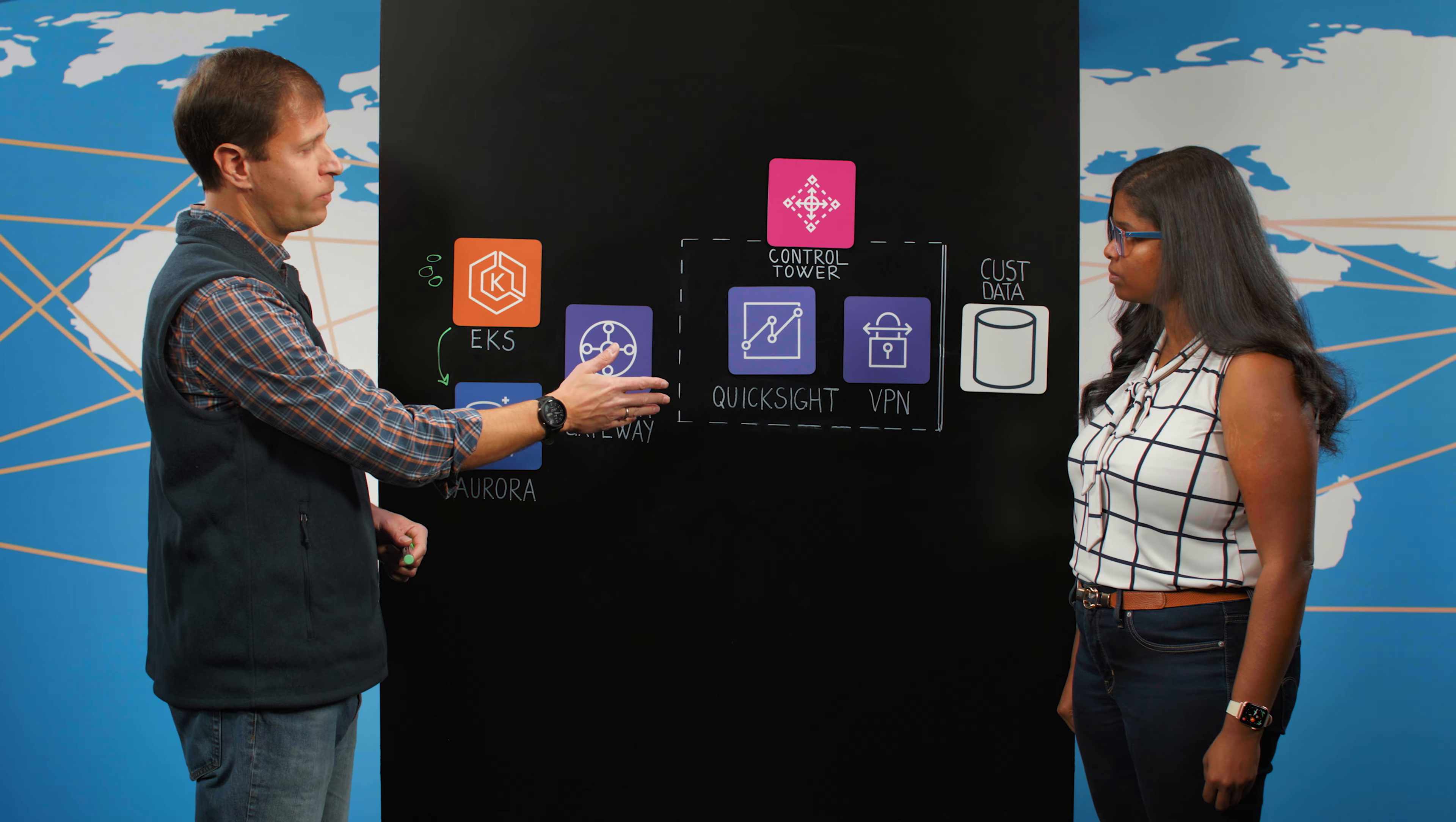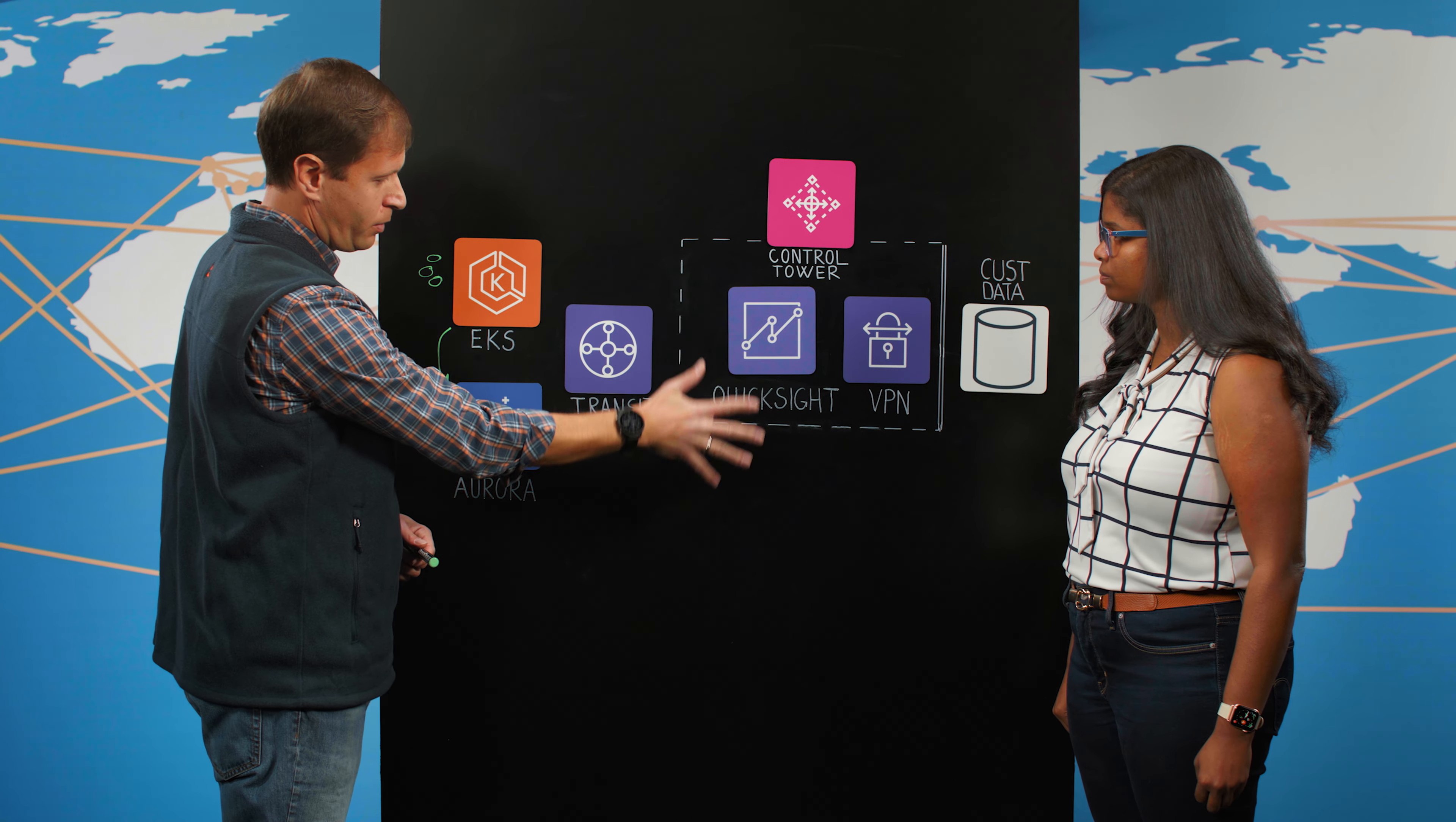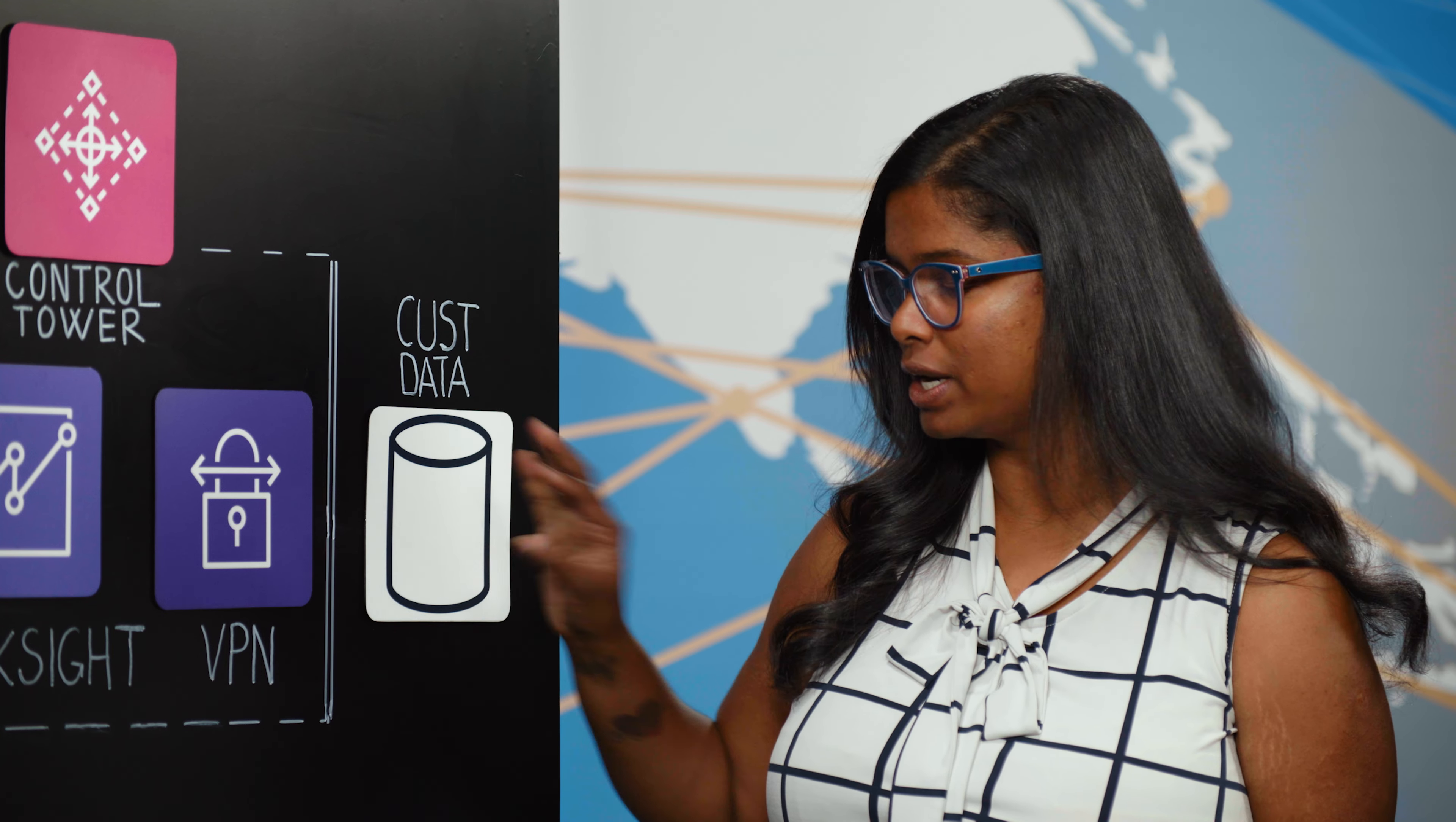But first, whenever we would onboard a new tenant using Control Tower, specifically Account Factory for Terraform, through our automated processes, we would create for them a new AWS account and then pre-provision it with QuickSight. So every new customer gets their own AWS accounts with single tenant architecture.